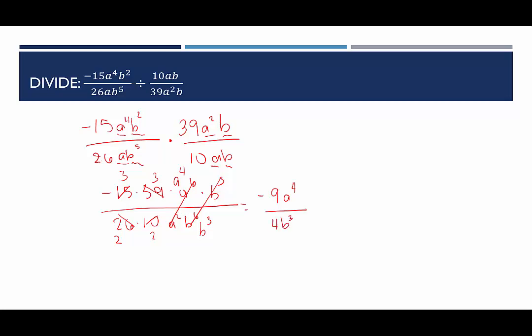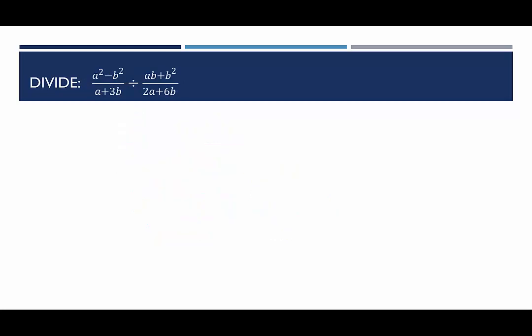I noticed that I only have one factor of a and one factor of b, which is good — that means we fully simplified. If you had a factor of a in both the numerator and denominator, you wouldn't be done. 9 and 4 have no common factors besides 1. You can leave the negative in the numerator or put it out in front of the fraction. This is our final answer for the first example.